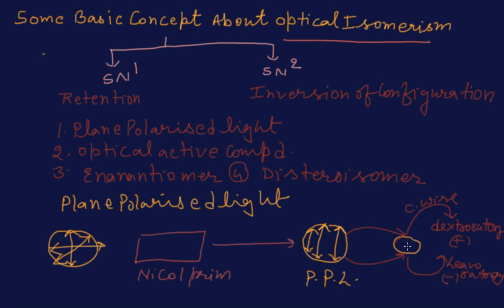Now let us understand what is an optically active compound. For optical activity, we first require plane polarized light. When normal light falls on a nickel prism, which is made up of calcium carbonate, it converts normal light into unidirectional plane polarized light. When this light falls on an organic compound and rotates clockwise, we get a dextrorotatory substance; if it goes anticlockwise, we get a levorotatory substance.